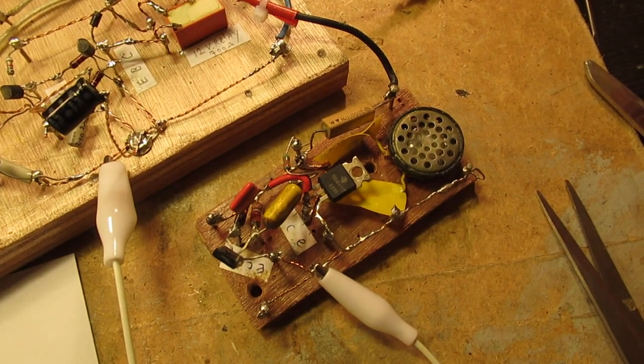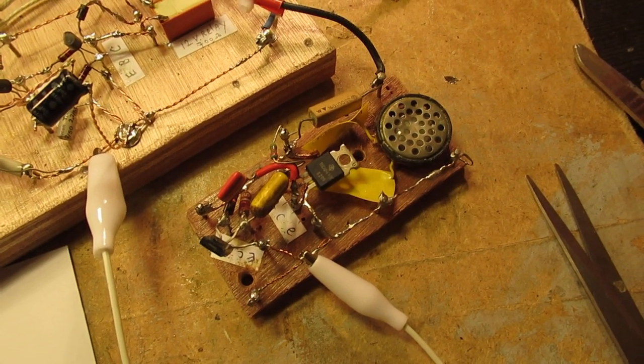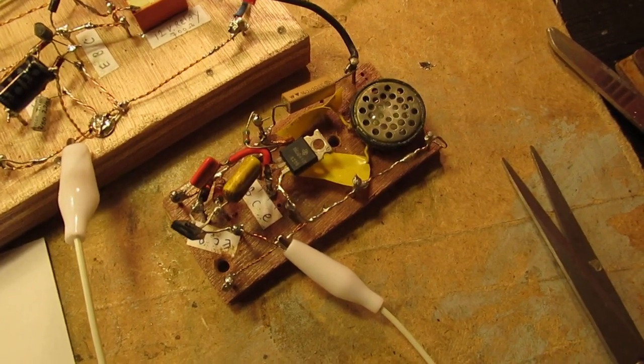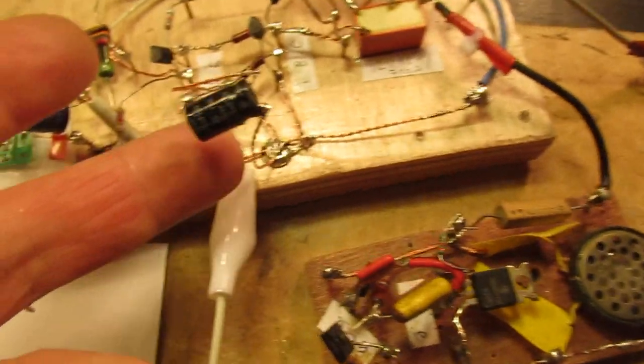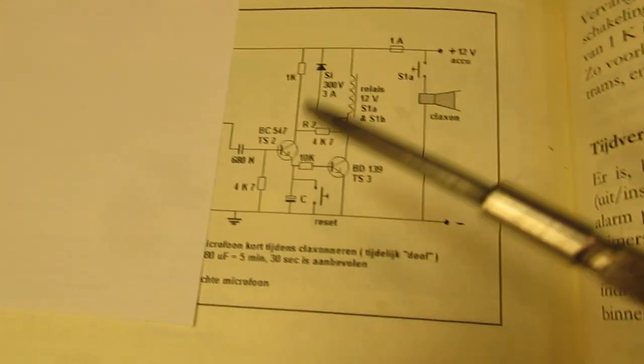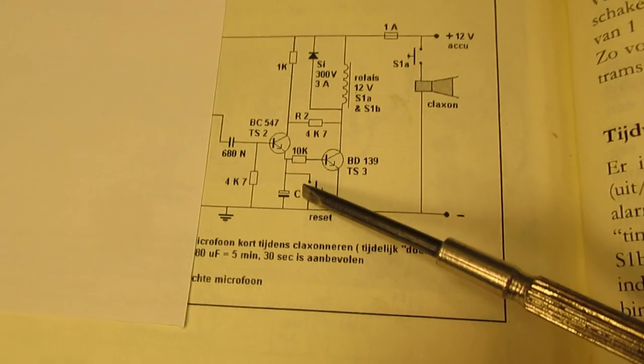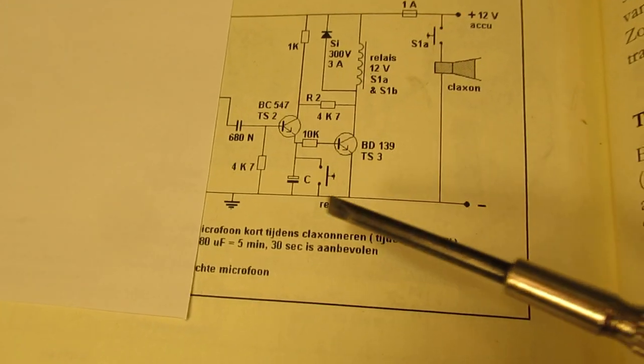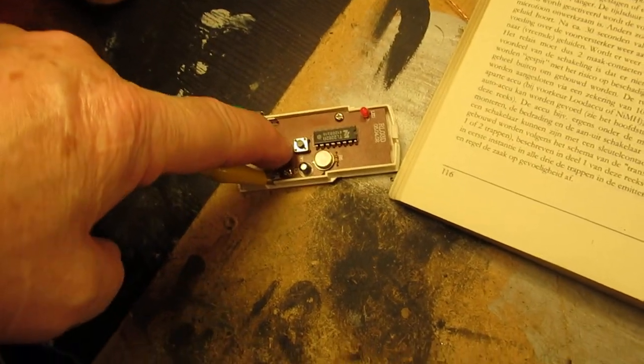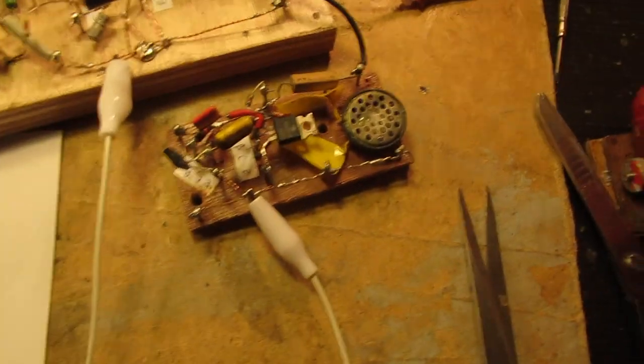The time during which that happens is set by this capacitor value. So that's this capacitor value in the circuit, in the schematic. This one sets the time. Push again the button, it starts again.